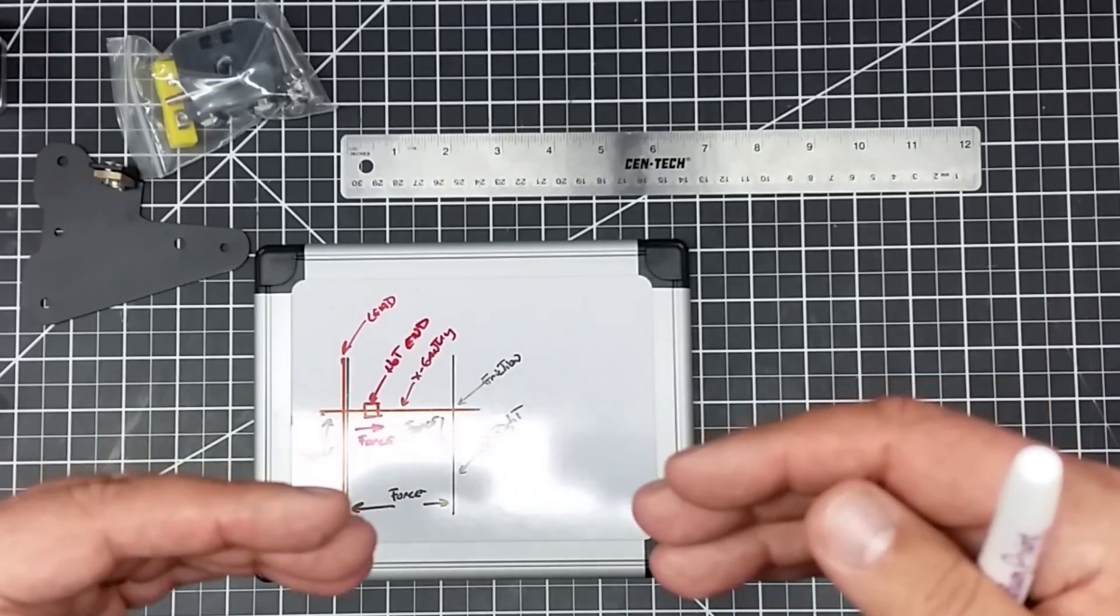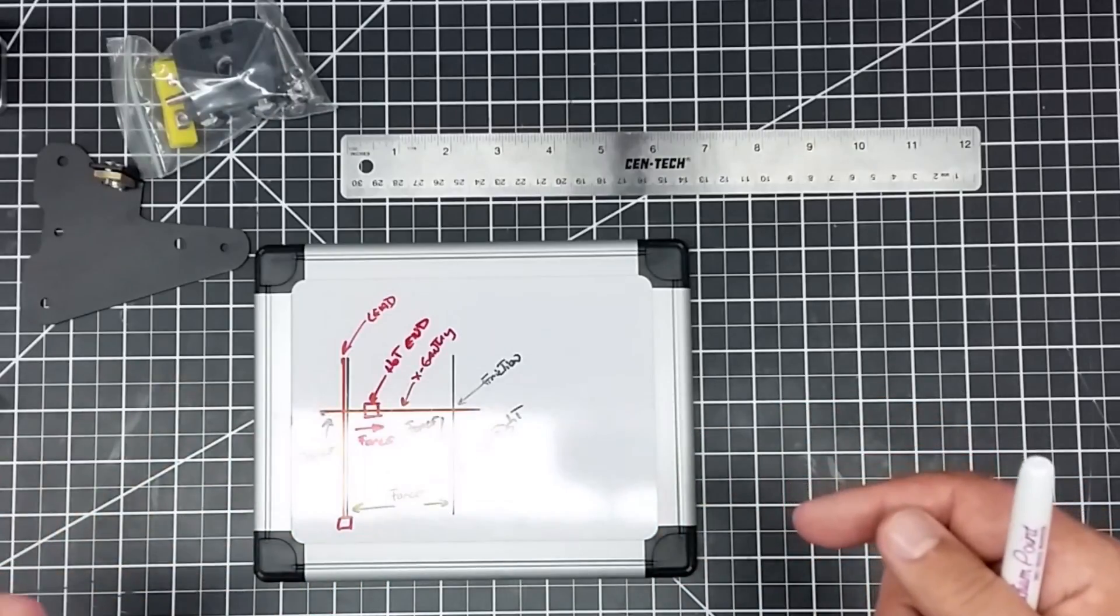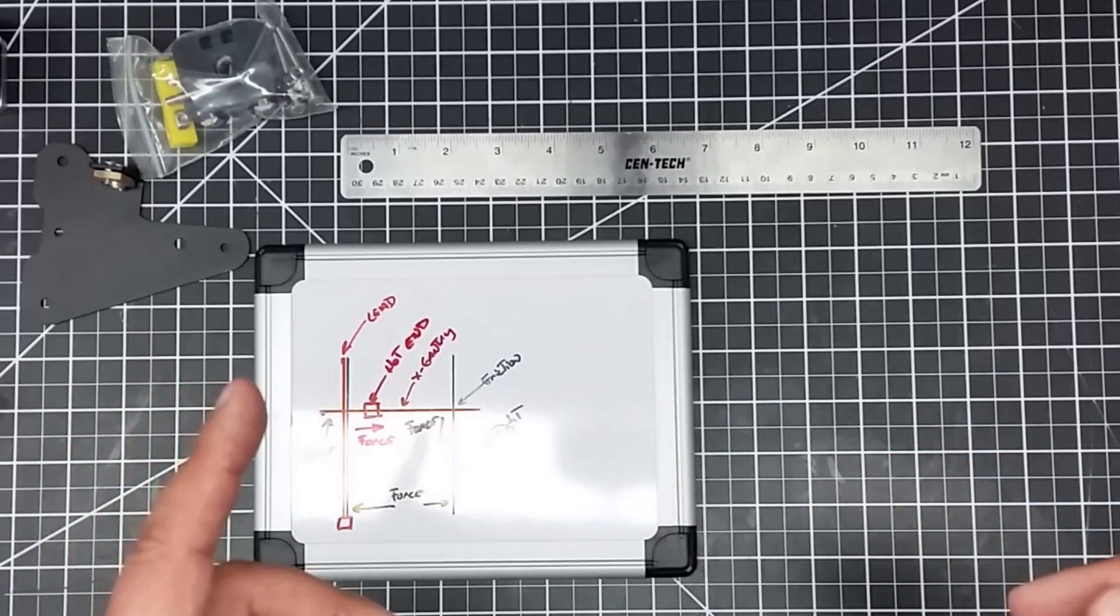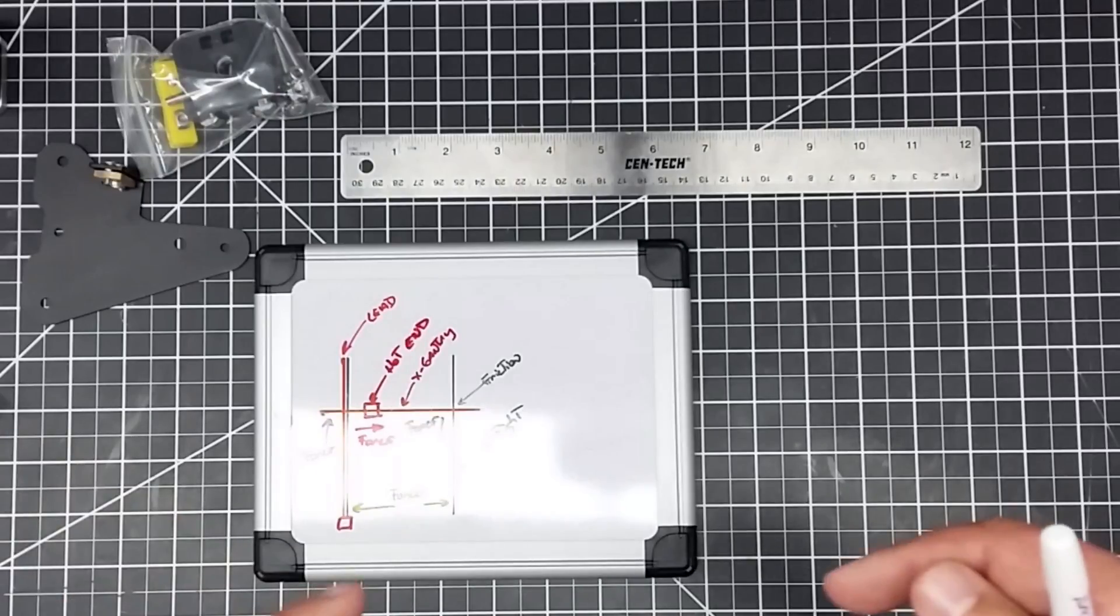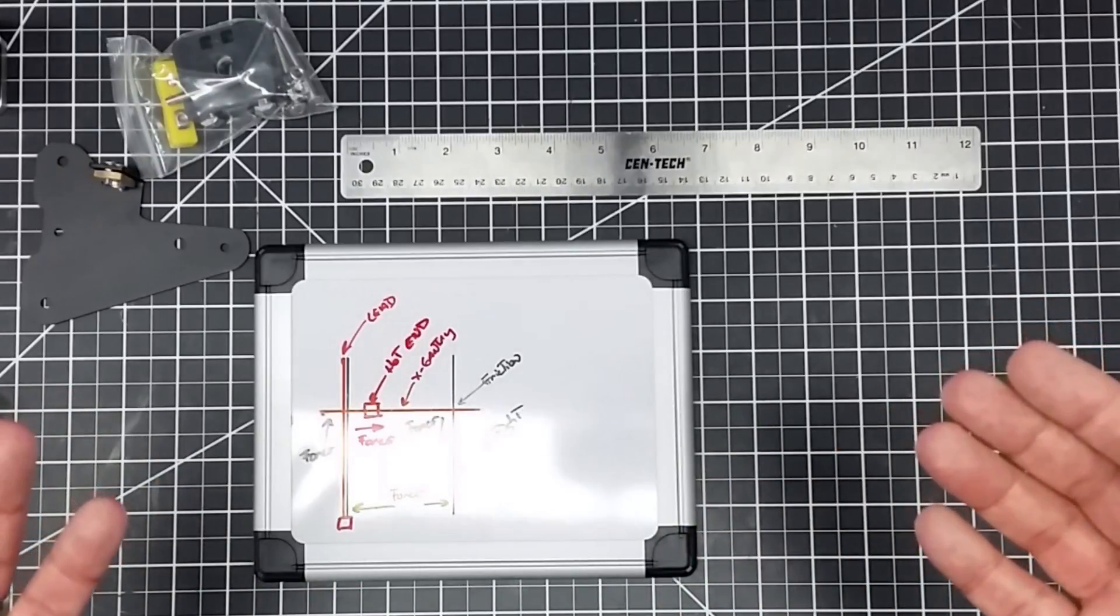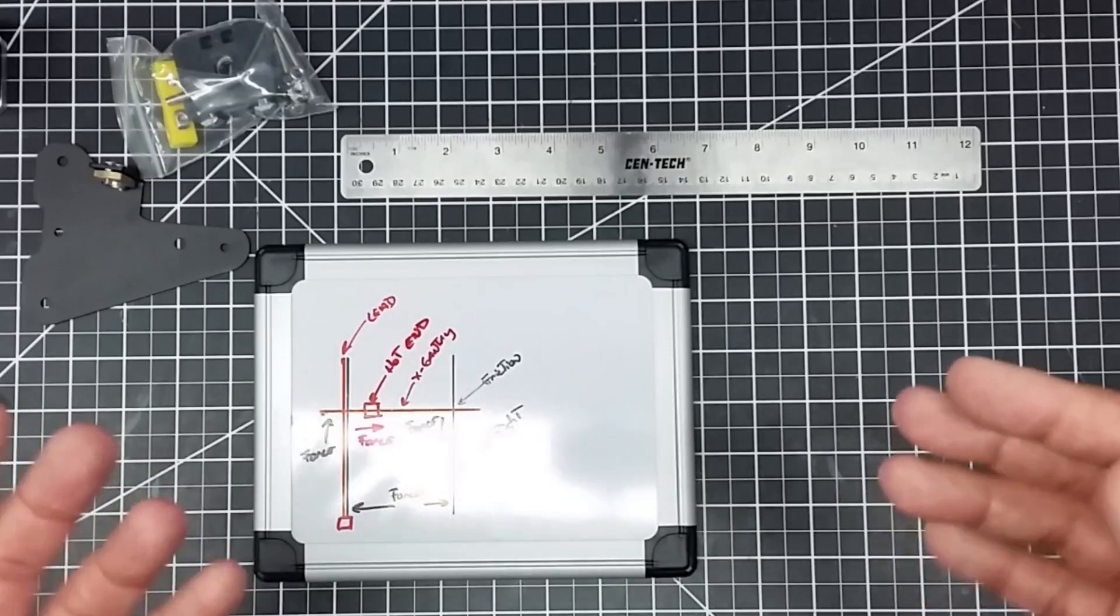My intention here is to add this lead screw, go up to a 0.6 nozzle and move up the print speed quite a bit. That's what I want to experiment here with is where can I go with that?